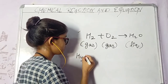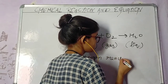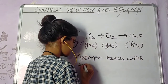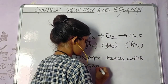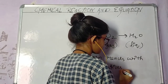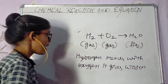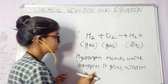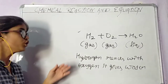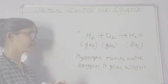We can write the reaction in a sentence: hydrogen reacts with oxygen and it gives water. But writing reactions in sentence form is lengthy. This is why we use a chemical equation to represent the same reaction in a shorter form.